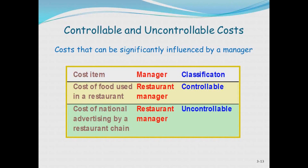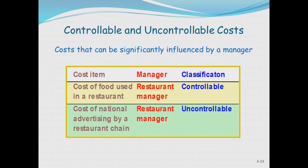There are also controllable and uncontrollable costs. When you're compensating a manager on their success or failure in doing their job, you want to compensate them on controllable costs, because it's tough to blame or reward somebody for things out of their control. For example, how a restaurant manager handles shrinkage and waste is controllable, but the cost of national advertising would not be controllable by a manager at a specific location — that's a non-controllable cost.